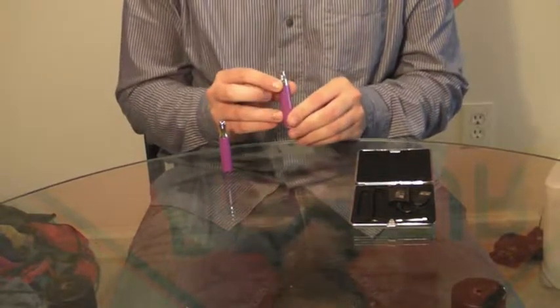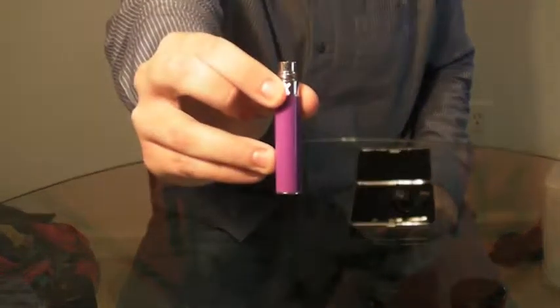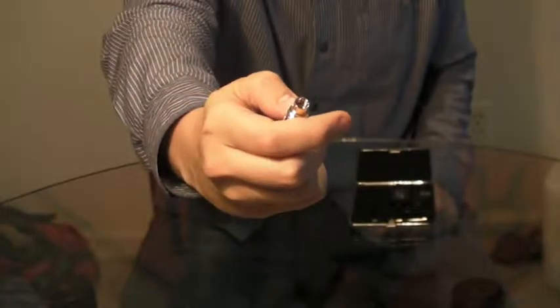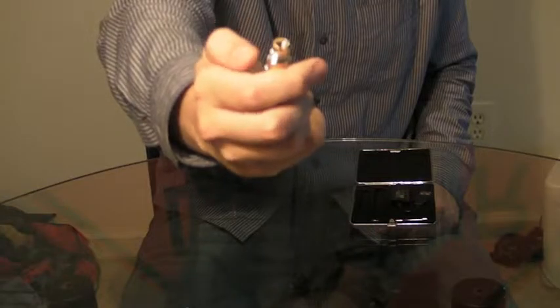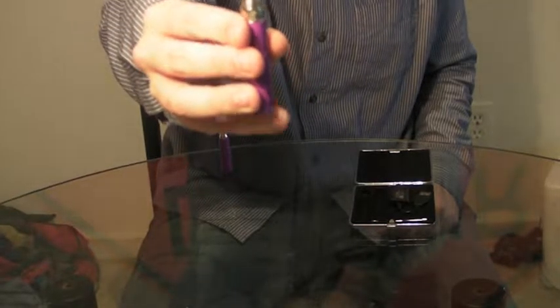The way this battery works is there are three voltage settings. You can see this light is red right now. Click it three times, it'll blink green, and that's the second setting. Three more times, and it's blue, which is the highest.